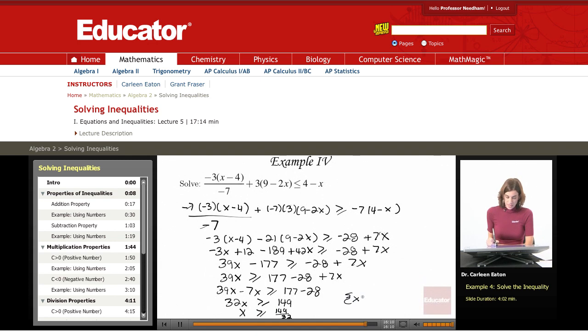Using set notation, x is greater than or equal to 149 over 32. You could also graph this. This is approximately equal to 4.7.